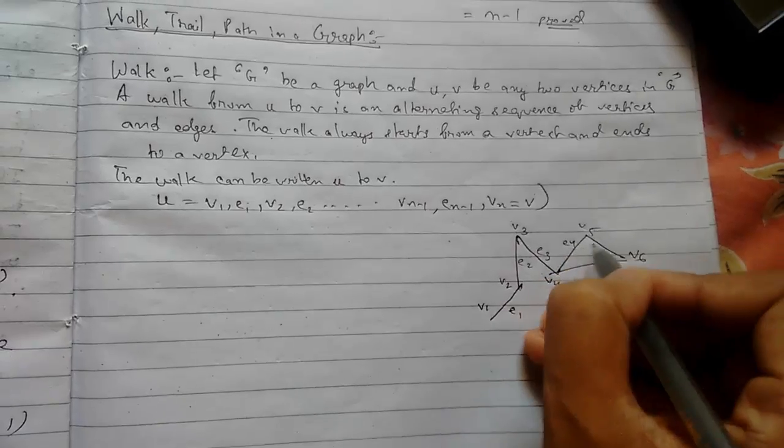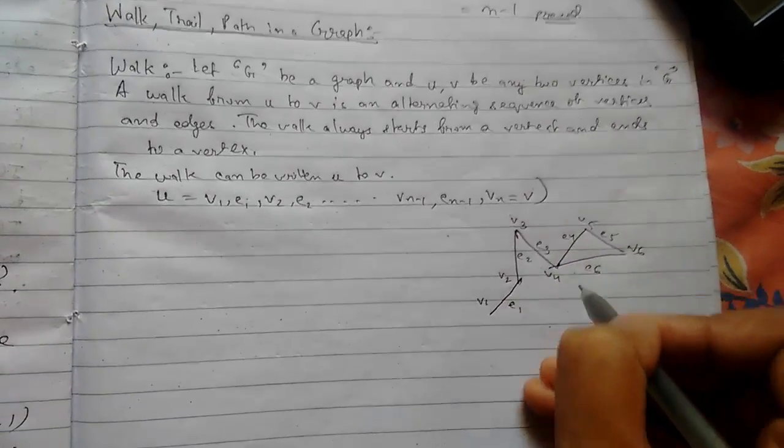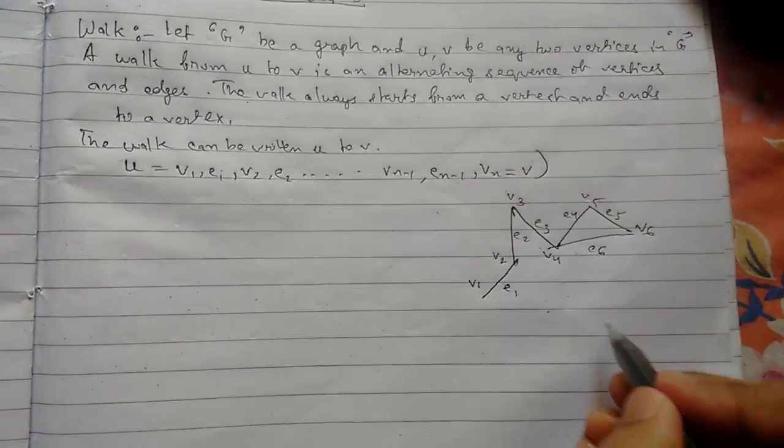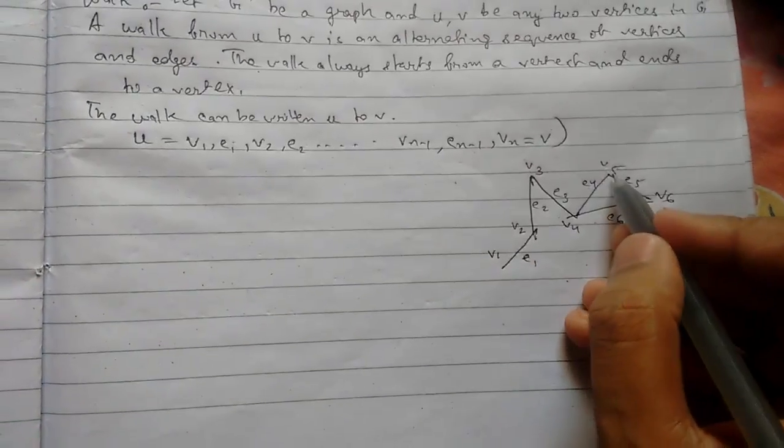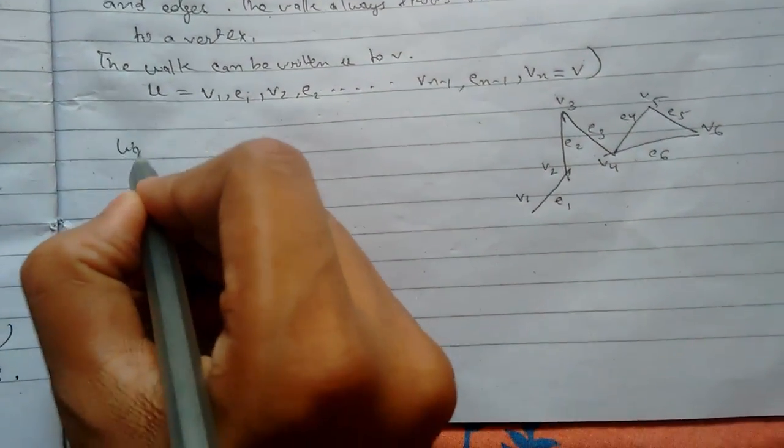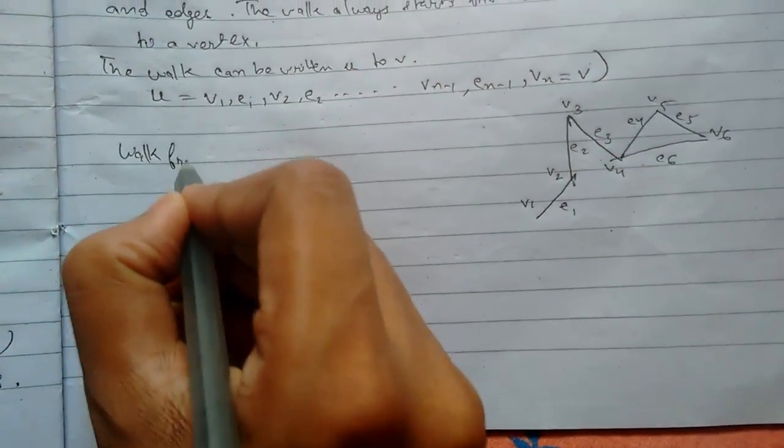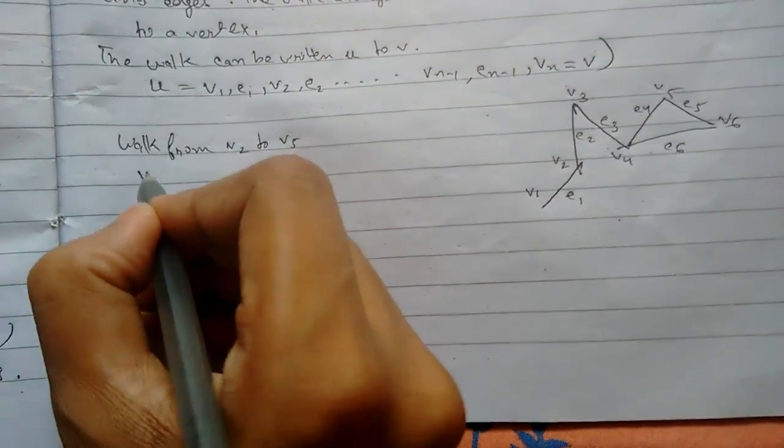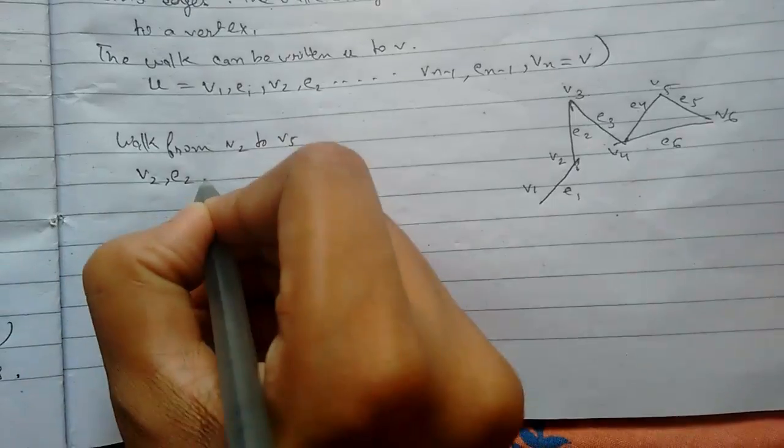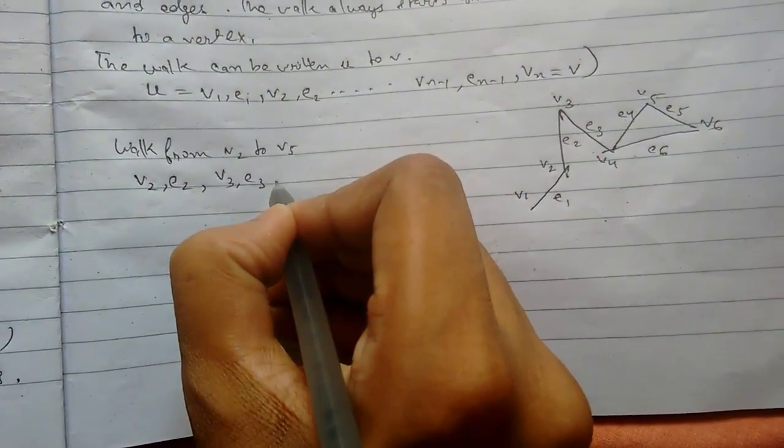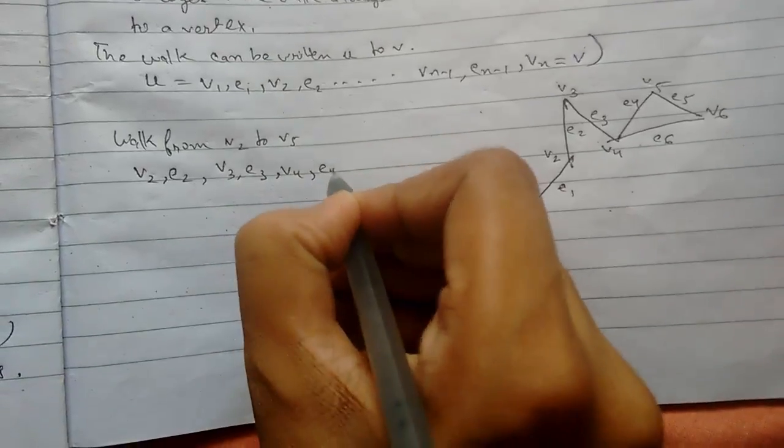Suppose we need to write the walk from v2 to v5. The walk from v2 to v5 can be written like this: v2, e2, v3, e3, v4, e4, and finally v5.